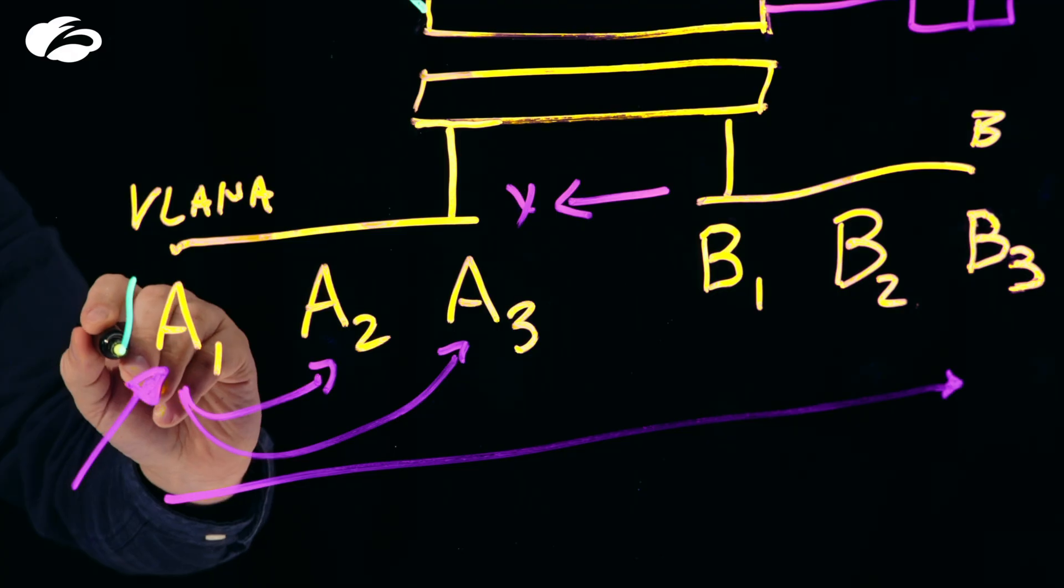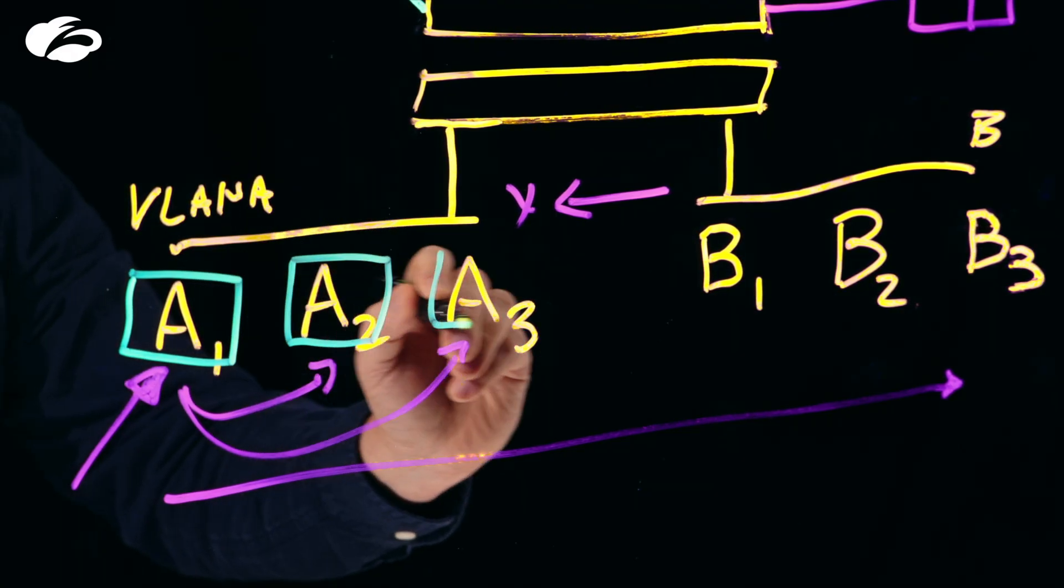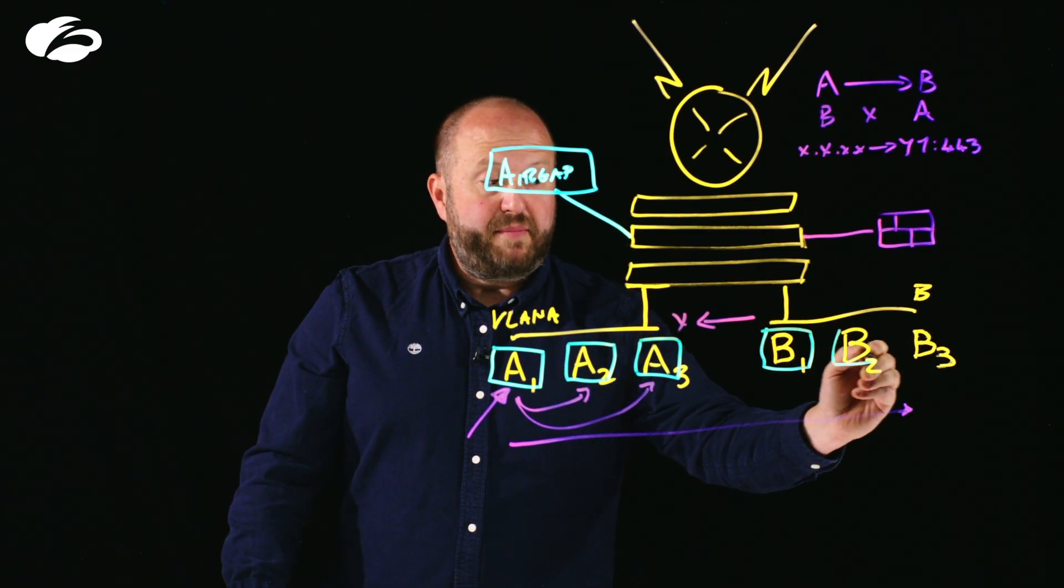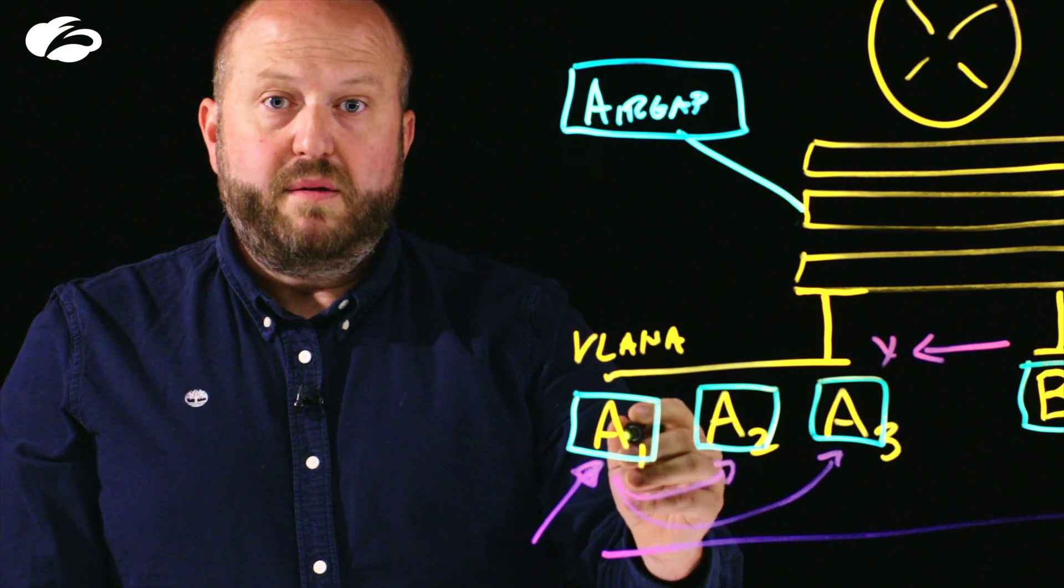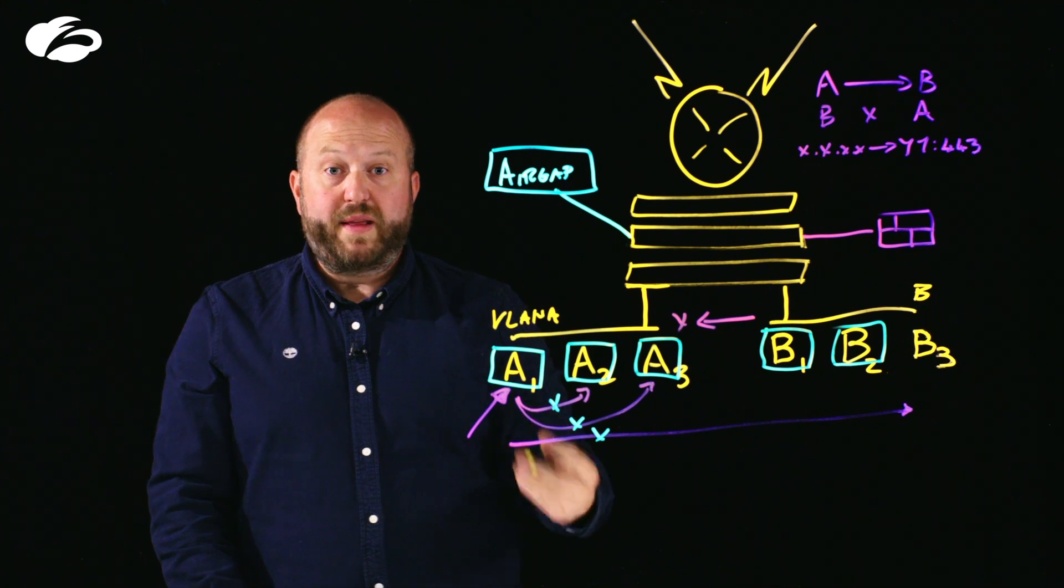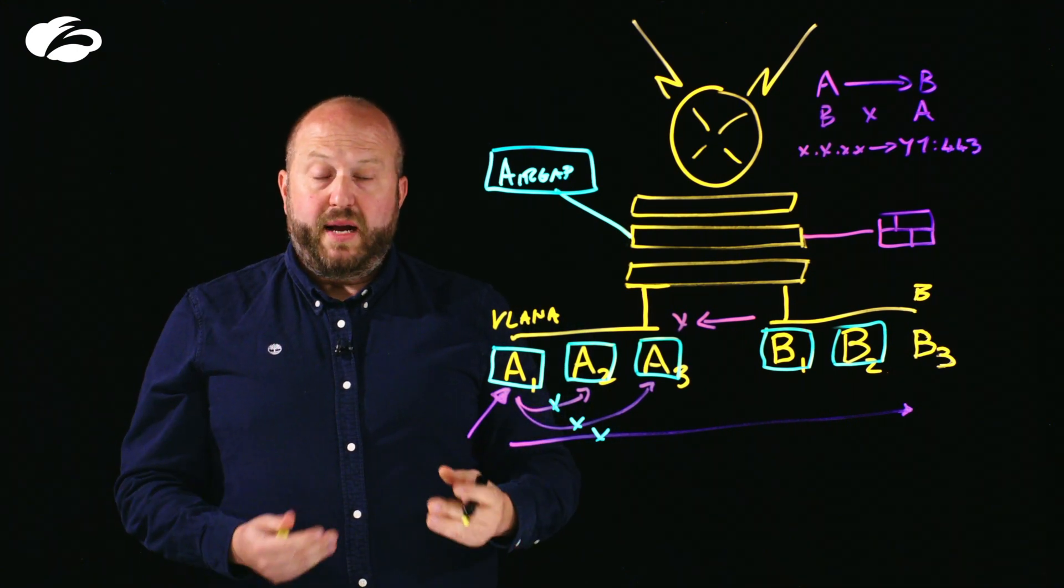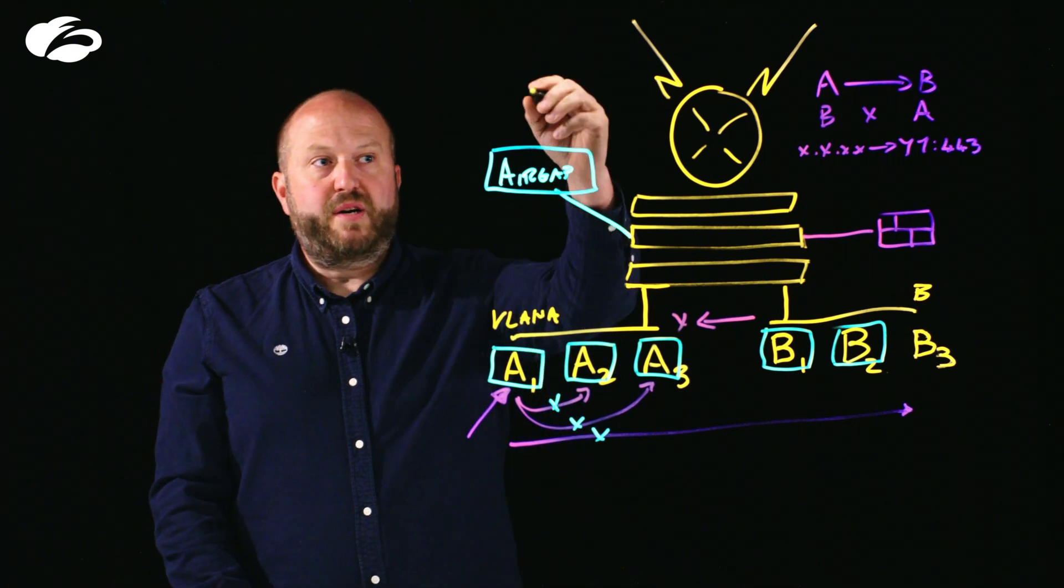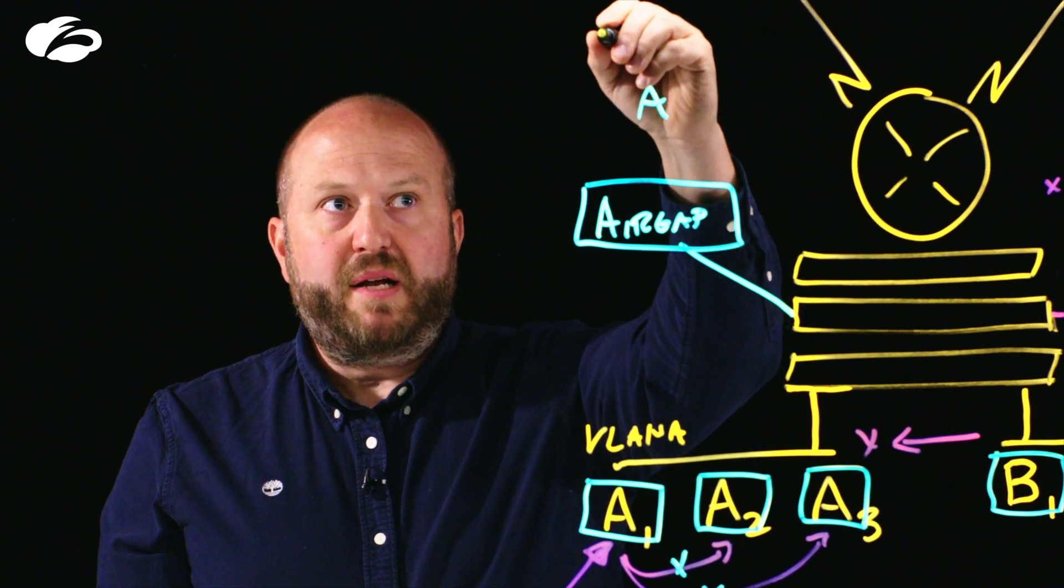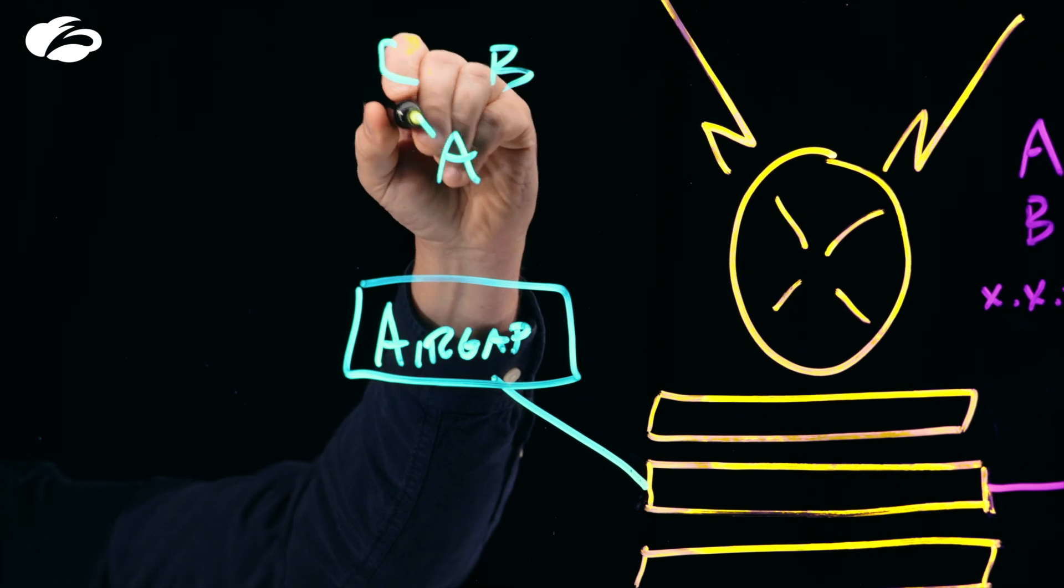The air gap solution basically creates a segment of one for every device on the network. So now no longer talk to A2 or A3 or the rest of the network without going through an enforcement point. When we deploy the air gap solution, generally we deploy firstly in learning mode. And what that actually enables is you to get complete observability and discovery of all of your network flows and assets.